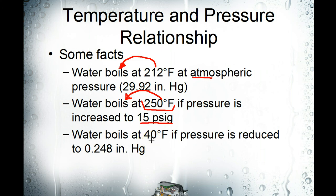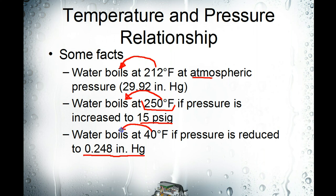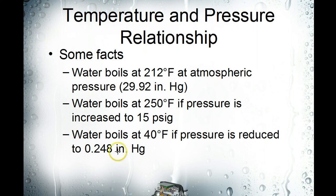Now let's drop the pressure below atmospheric pressure — put it in a little vacuum here — and that's what this is: inches of mercury. Now it only takes 40 degrees Fahrenheit of molecules in motion to change the state of water at 0.248 inches of mercury. So remember: temperature is energy, and boiling is change of state.